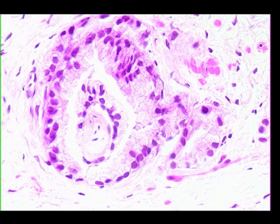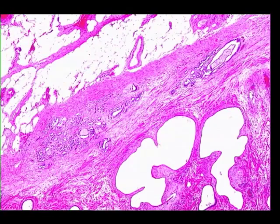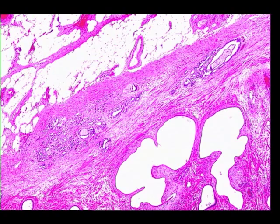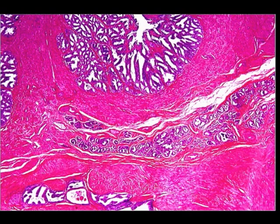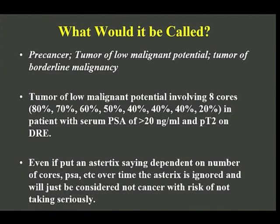Here we see a prostate cancer wrapping around nerve. Here we see prostate cancer extending out of the prostate — it's acting like a cancer, locally infiltrative. Here we see a cancer going up around the seminal vesicle, which is a Gleason 6 cancer. So it invades like cancer morphologically. It is cancer.